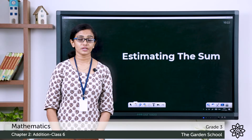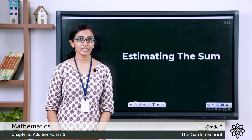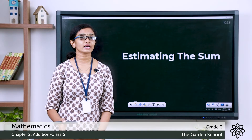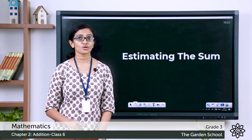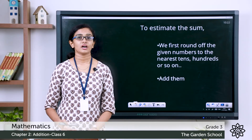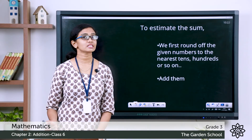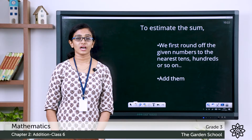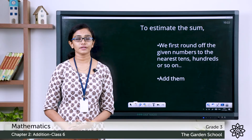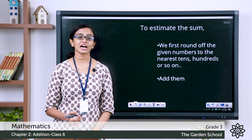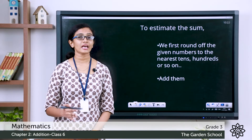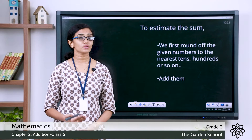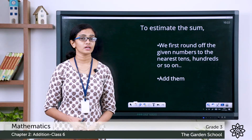Estimation, or finding the estimated value of a calculation, simply means you are guessing the value of the calculation. To find the estimated value, we have to first round off the given numbers to the nearest ten, hundred, thousand, and so on, and then do the required calculation.